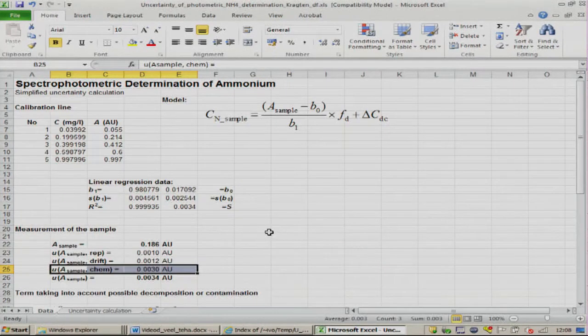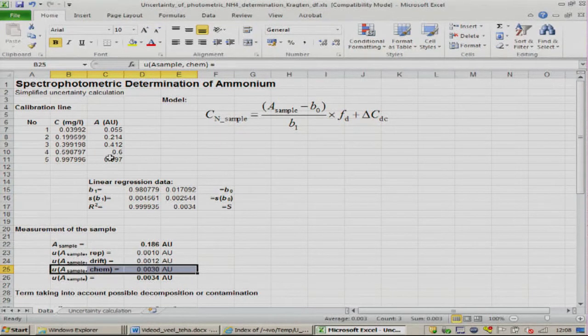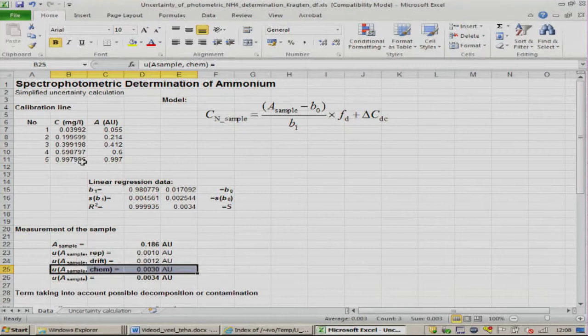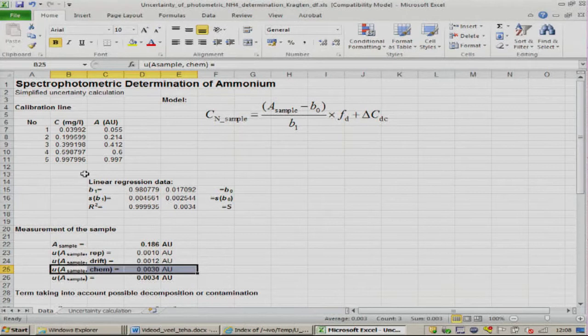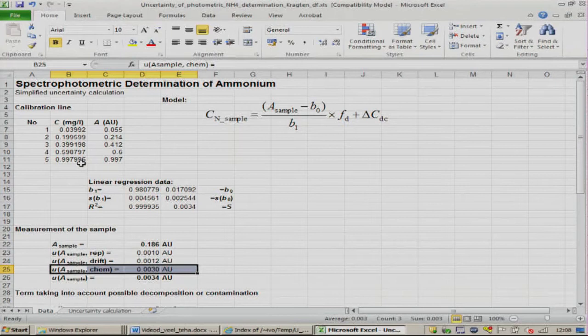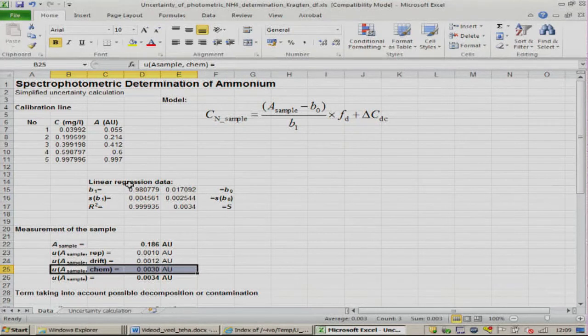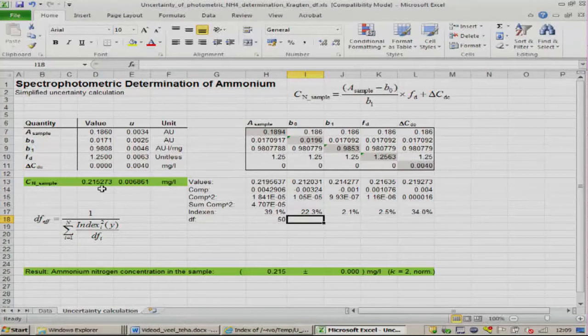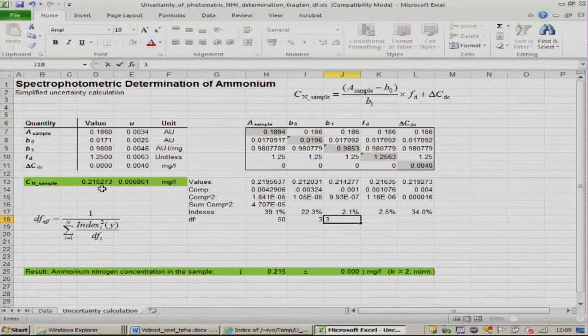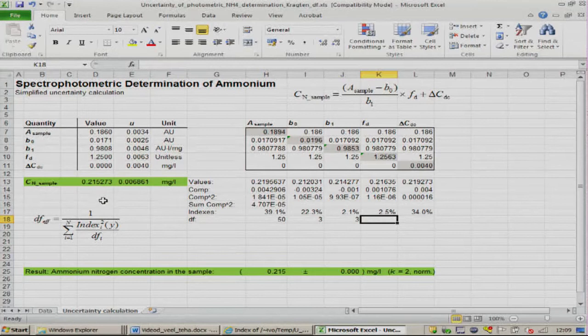Now B0 and B1, the intercept and the slope of the regression line, come from these regression data. We have here five data points. But in linear regression, the number of degrees of freedom is found from the number of data points by subtracting the number of found parameters. In our case, there are two parameters: the slope and the intercept. Five minus two is three. So in this case, we have three degrees of freedom, both for the slope and for the intercept.